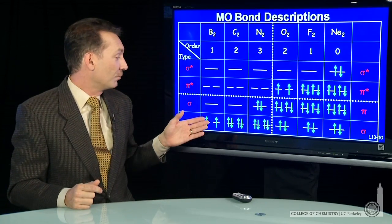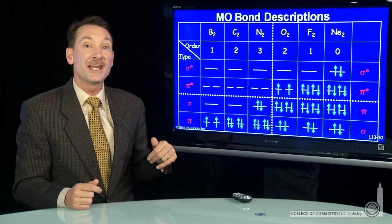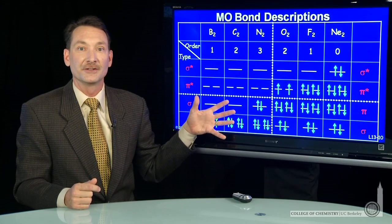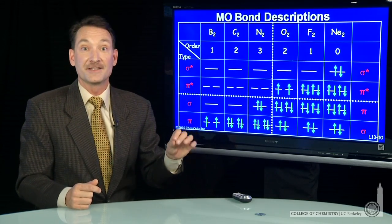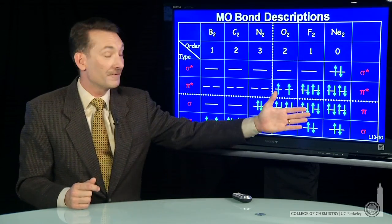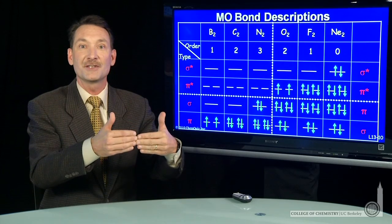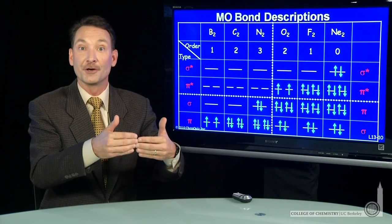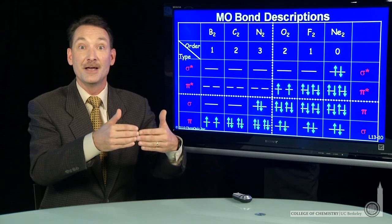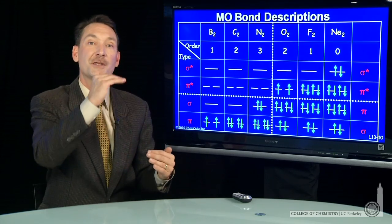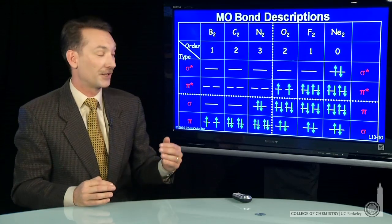When you start with boron, we'll take the p orbital contributions only to the molecular orbitals. Of course, boron has 2s and 2p atomic orbitals. But for all of these, the 2s give you a sigma and a sigma star, both completely full. So those don't contribute to the bond order. Sigma s and sigma s star cancel each other out. So we'll just look at the p contributions to the molecular orbitals.